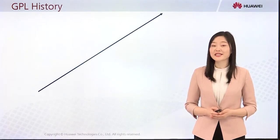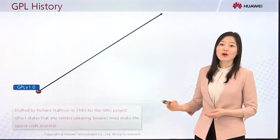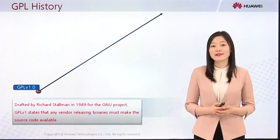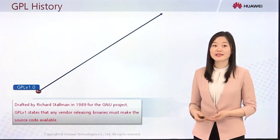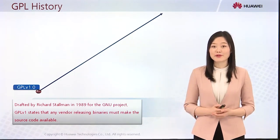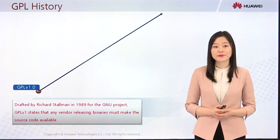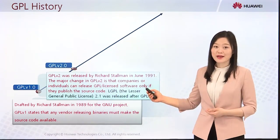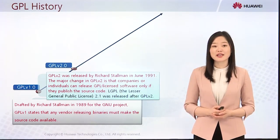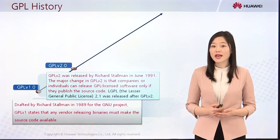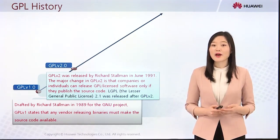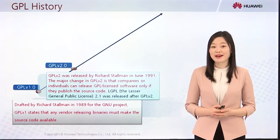Let's have a look at the history of GPL. GPL was drafted by Richard Stallman in 1989 for the GNU project. GPL v1 states that any vendor releasing binaries must make the source code available. GPL v2 was released by Richard Stallman in June 1991. The major change in GPL v2 is that companies or individuals can release GPL-licensed software only if they publish the source code. LGPL, the Lesser General Public License 2.1, was released after GPL v2.